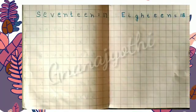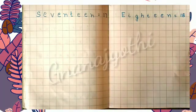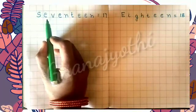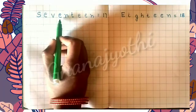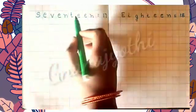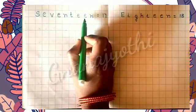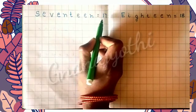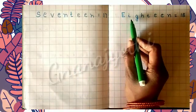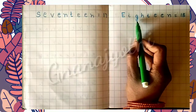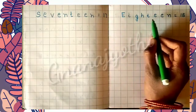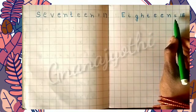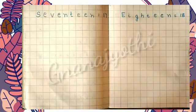Now let us start writing the numbers 17 and 18. First, the spelling: S E V E N T E E N is equal to 17. E I G H T E E N is equal to 18.